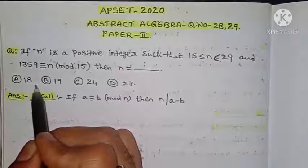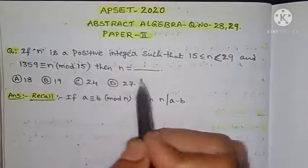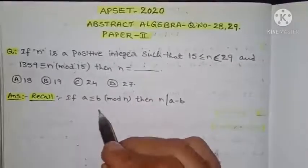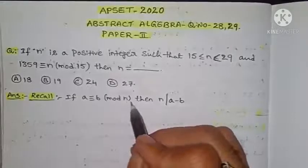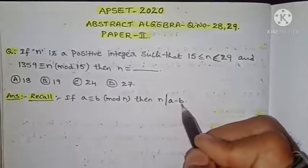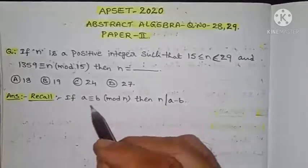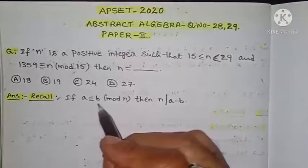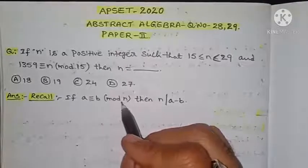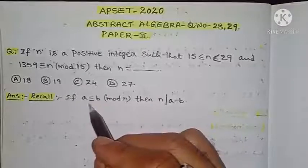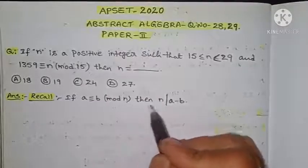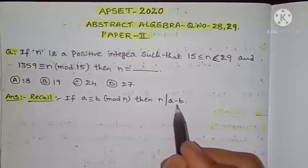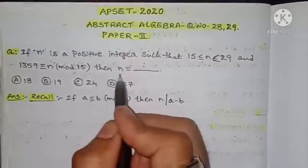Before going to the solution, we have to recall: if a is congruent to b modulo n, then n divides (a minus b). This is the property — if a is congruent to b modulo n, where a and b are integers and n is also an integer, then n divides (a minus b). By using this property we find the number n.